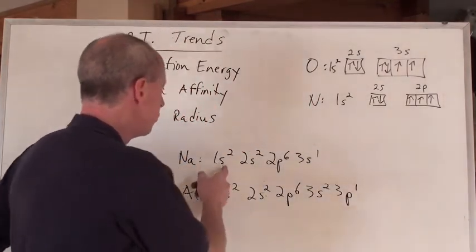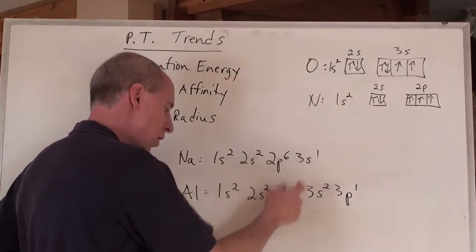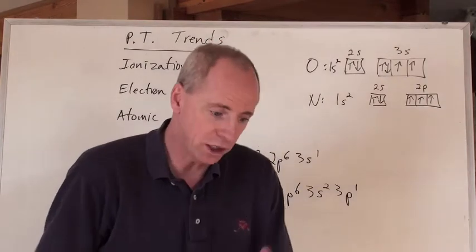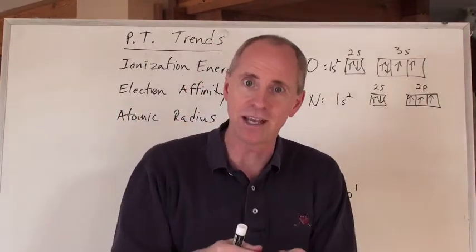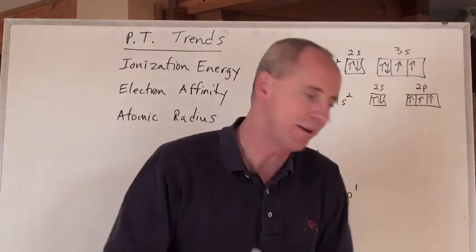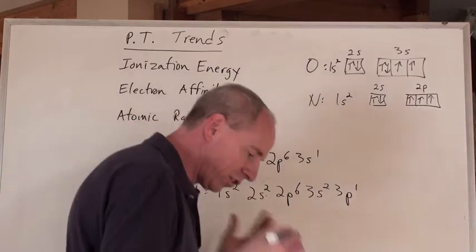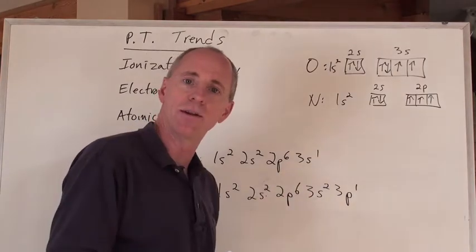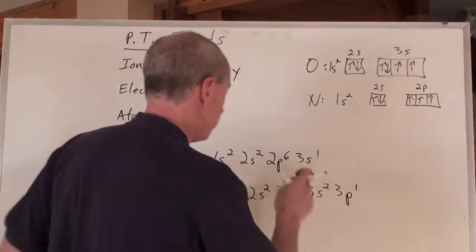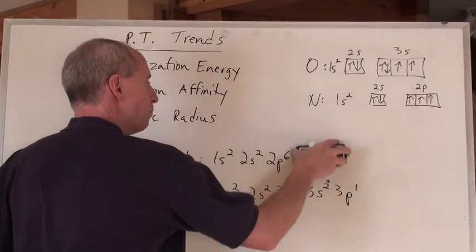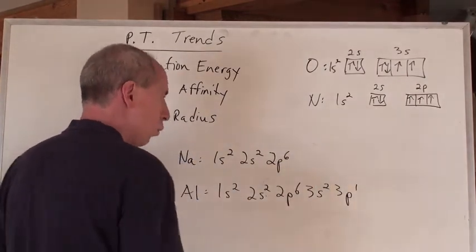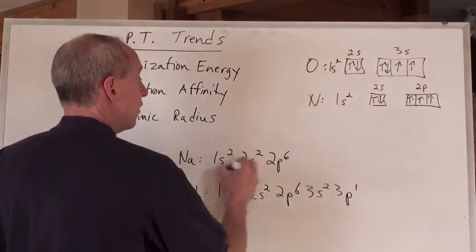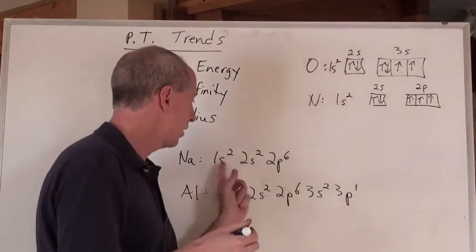For example, sodium is 1s², 2s², 2p⁶, 3s¹. When we try to remove an electron from sodium, you start from the outside and work your way in — like eating an apple, you can't start at the core. When you add energy to sodium, you remove its outermost electron first, which is the 3s electron. That takes almost 500 kilojoules per mole of gaseous sodium to remove that 3s electron.